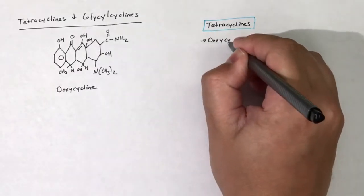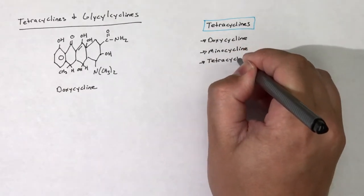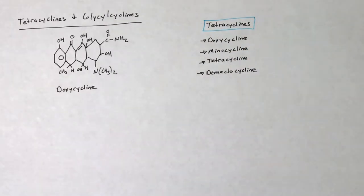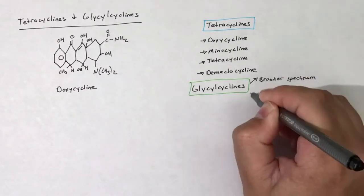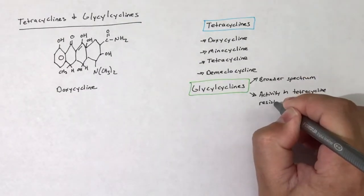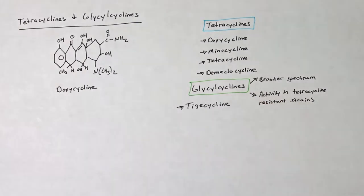Glycylcyclines have a similar structure as the tetracyclines, and these alterations give the glycylcyclines a broader spectrum and activity in tetracycline-resistant strains. There is only one glycylcycline available for use, and its name is tigecycline.